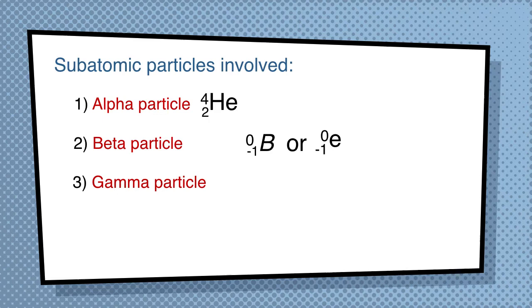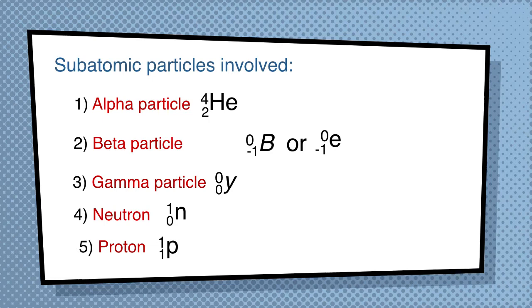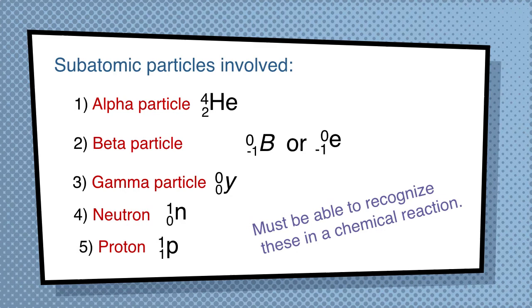For a gamma particle, it is written as 0, 0, gamma. Then we have a neutron, which has 1, 0, and N as the symbol. Or a proton, which is 1, 1, and P. You need to be able to recognize these in a nuclear reaction.